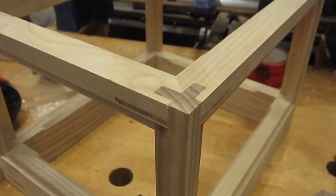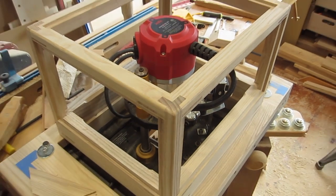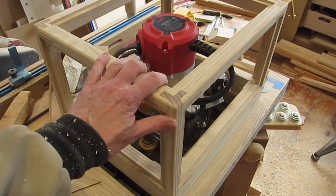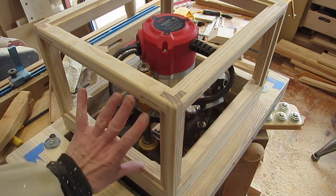And here it is all glued up. And that forms the skeleton of a dust box for the router with recesses in all the sides that will receive the quarter inch plywood panels.